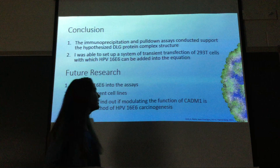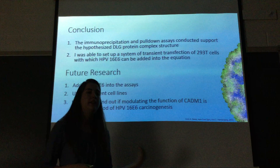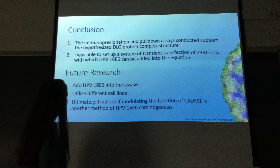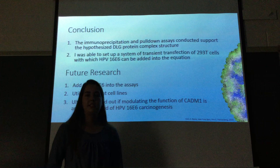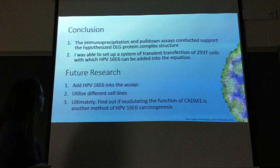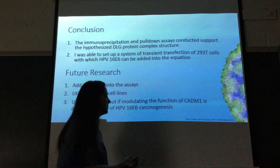In conclusion, both the immunoprecipitation and pull down assays supported the hypothesized DLG protein complex structure. I was able to set up a system of transient transfection of 293T cells with which we can now add HPV 16E6 into the equation to see how it changes protein interactions. For future research, adding the HPV virus into the assays and utilizing different cell lines would be valuable, as we ran into some problems visualizing proteins in 293T cells. Ultimately, we want to find out if modulating CATM1 function is a mechanism by which HPV causes epithelial cells to become cancerous — and if so, we could potentially create drugs to prevent that.